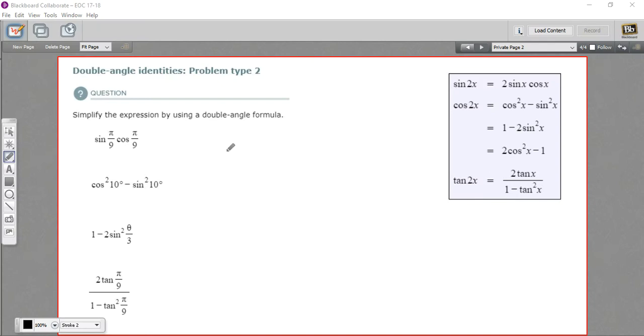In these problems, we're using the double angle identities to simplify some trigonometric expressions. And just a reminder, the double angle identities, we've got the sine of 2x, which is 2 times sine x, cosine x.